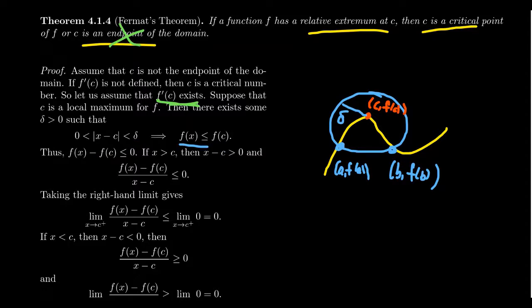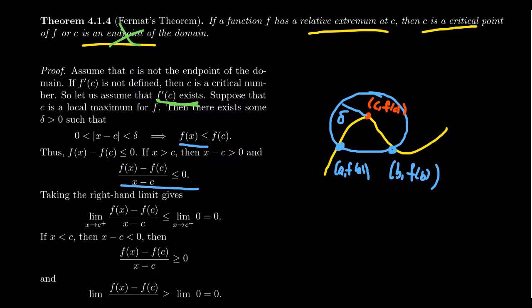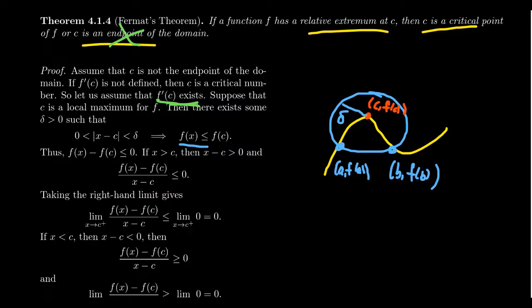Since f(x) ≤ f(c), subtracting f(c) from both sides gives f(x) − f(c) ≤ 0. Now if x is bigger than c, then x − c is positive, so a non-positive divided by a positive gives f(x) − f(c) over x − c ≤ 0. Taking the limit as x approaches c from the right, the limit of the difference quotient is less than or equal to zero.